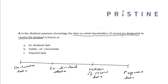So in this case, the date on which the shareholders of record are designated to receive the dividend is known as the holder of record date. The correct option is option B.